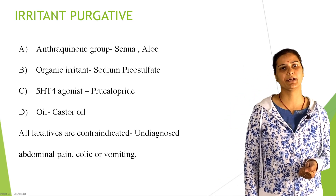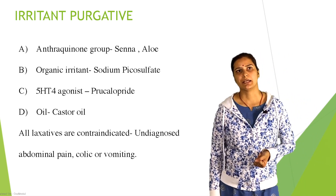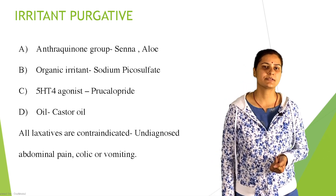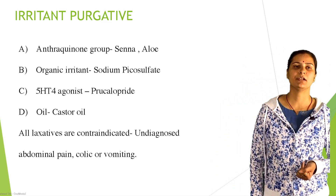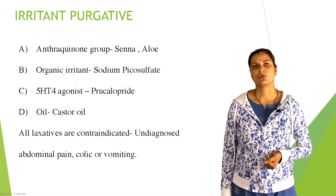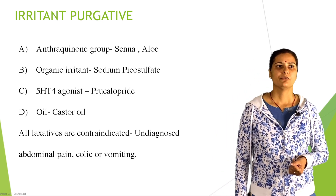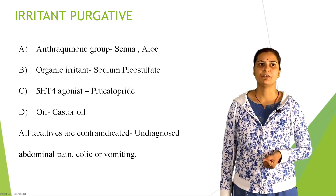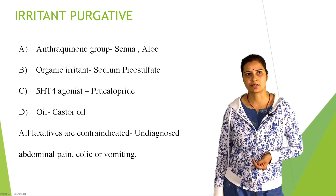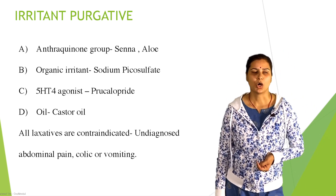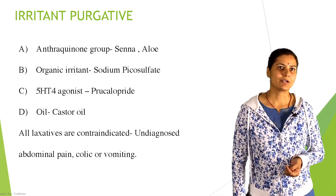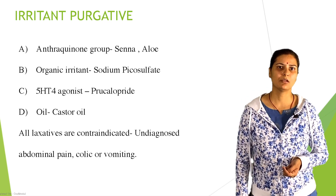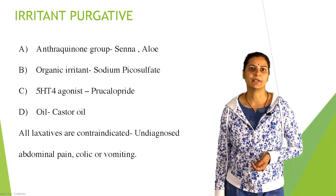Irritant purgatives are of four types: first, anthraquinone group (e.g., senna and aloe); second, organic irritants (e.g., sodium picosulphate); third, 5-HT4 agonists (e.g., prucalopride); fourth, oils (e.g., castor oil). All laxatives are contraindicated in undiagnosed abdominal pain, vomiting, or colic. Thank you.